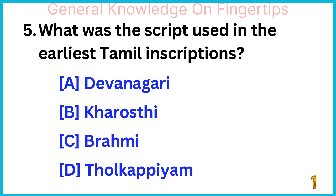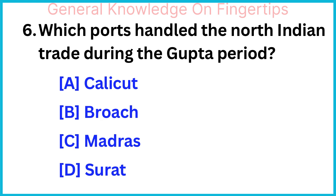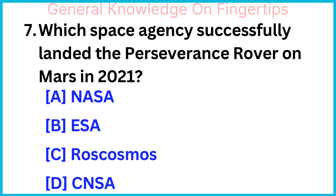Which ports handled the North Indian trade during the Gupta period? Broach. Which space agency successfully landed the Perseverance rover on Mars in 2021? NASA.